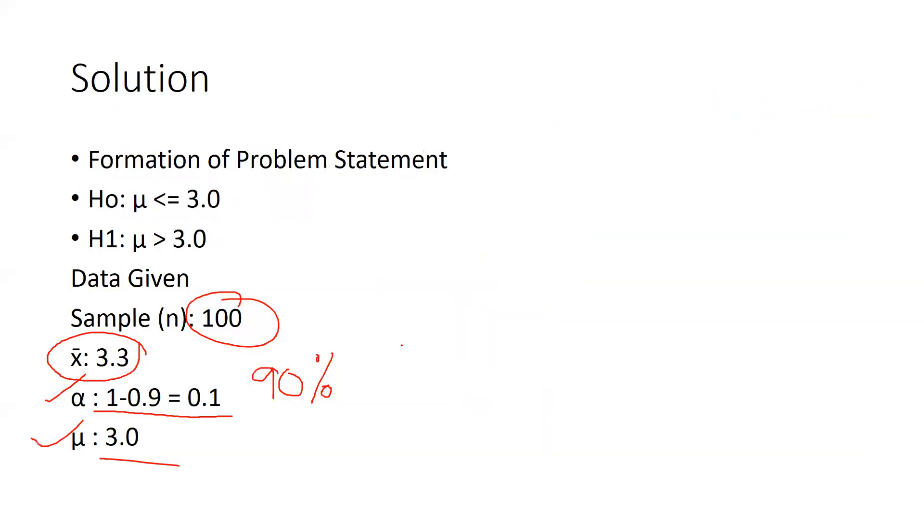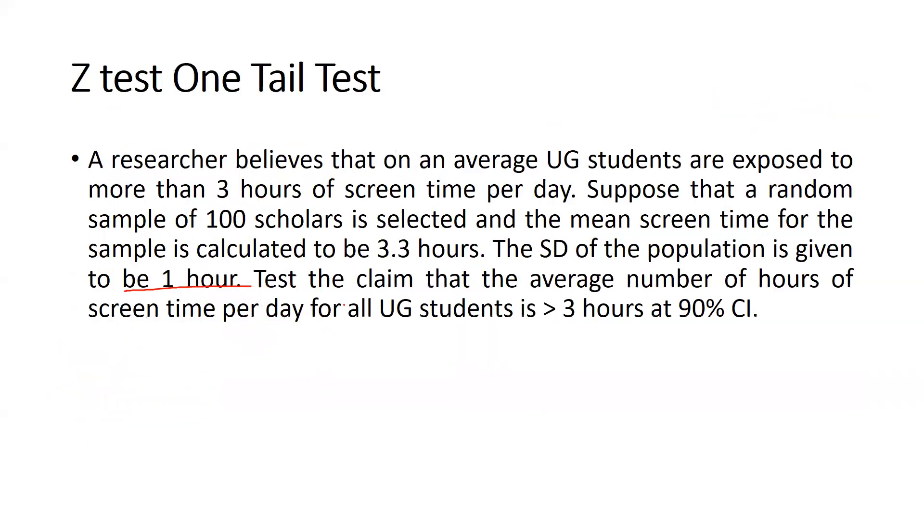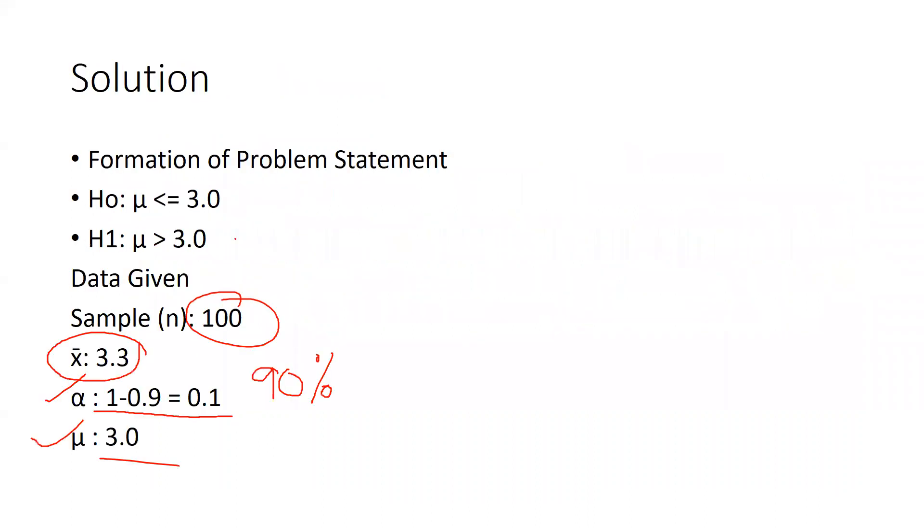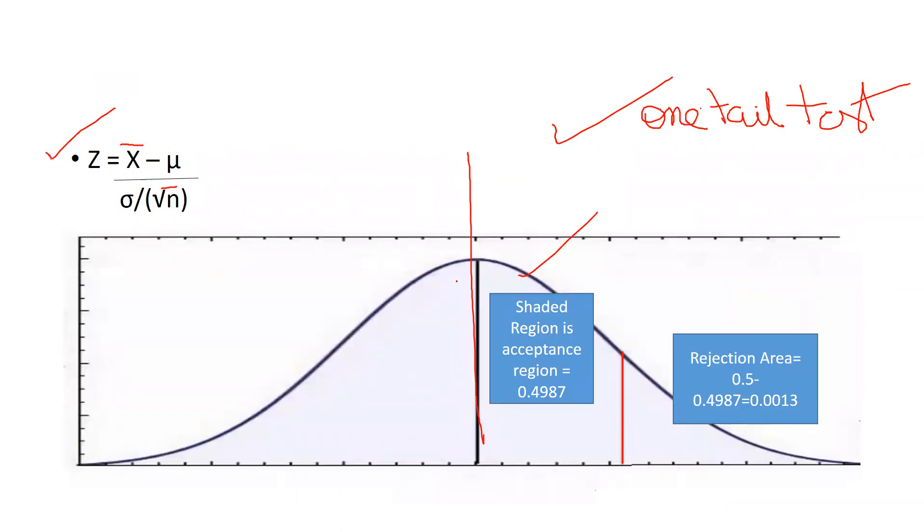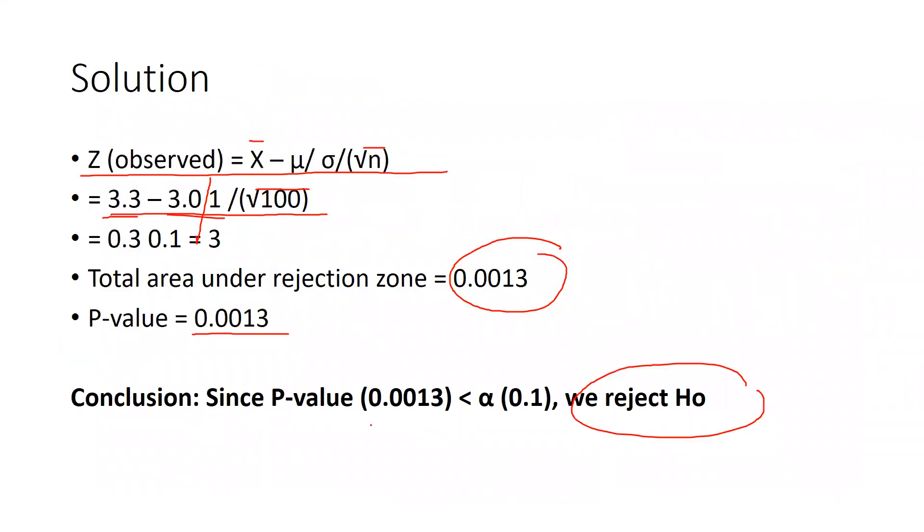Ultimately we reject null hypothesis. We can say in the question statement null hypothesis that was we were talking about μ means population mean it would be equal to 3 but it's not happening here. You can see here that is why null hypothesis is rejected, our p value that is less than 0.1.